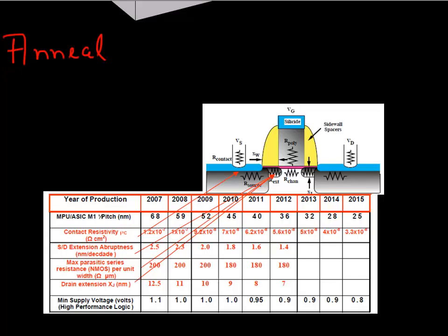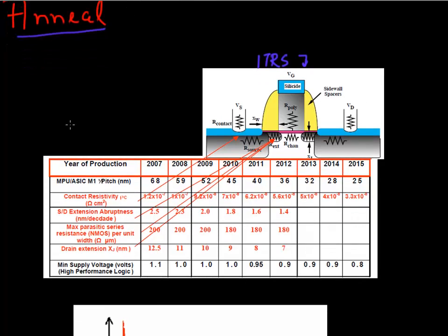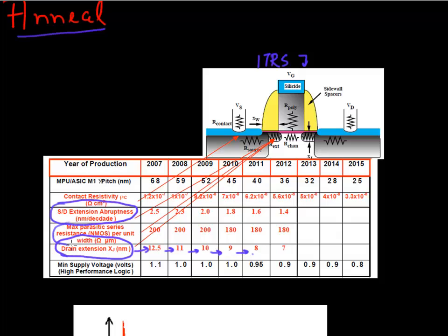The anneal requirements are driven by device requirements as shown in the ITRS roadmap. To control short channel effects as you scale your gate length and gate oxide thickness, you also want to scale your junction depth, so junction depth should keep reducing every year. At the same time, you want lower resistance because you don't want transistor performance limited by source and drain resistance, so you want to reduce source and drain extension resistance while also making it shallower.